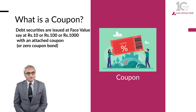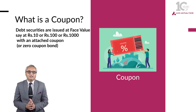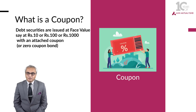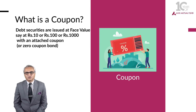The instrument can be of face value of 10 rupees, 100 rupees, or 1000 rupees. In this case, let us assume it's a 5-year tenor paper with a 10% coupon attached to it. The original investor who invests directly from either the issuer or in the primary markets — the coupon is nothing but the 10% interest attached to that particular instrument.